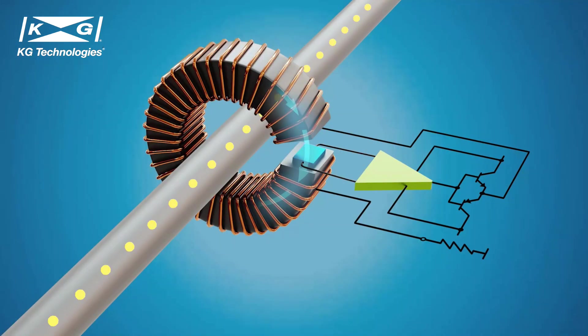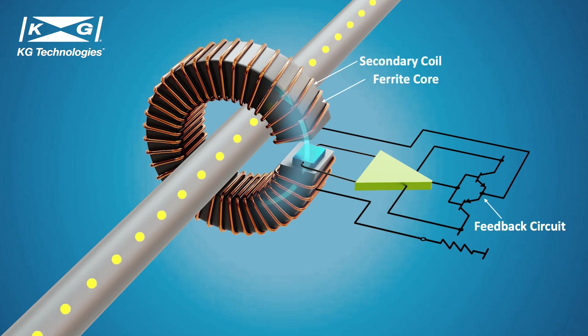For closed-loop Hall effect current sensors, it has a feedback circuit and a secondary coil wrapping around the ferrite core. The feedback circuit takes the amplified current signal from Hall sensor and sends it to the secondary coil. The magnetic field generated by the secondary coil is opposite to the magnetic field generated by the primary current.